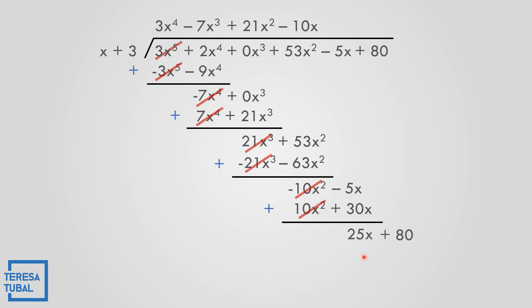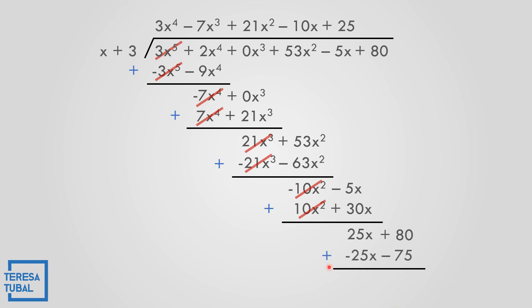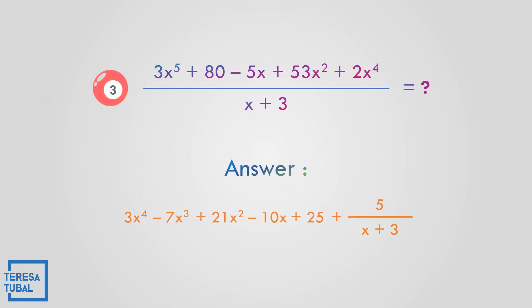Bring down positive 80. Divide: 25x divided by x is 25. Multiply: 25 times x is 25x, and 25 times 3 is positive 75. Subtract — distribute the negative: negative 25x minus 75, proceed to addition. 25 minus 25 cancels. 80 minus 75 gives a remainder of positive 5. The quotient is 3x to the fourth minus 7x cubed plus 21x squared minus 10x plus 25, and the remainder is 5 over x plus 3.